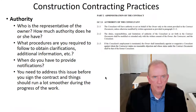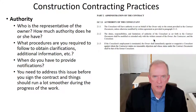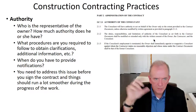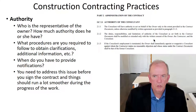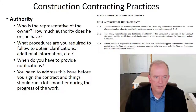Authority: if the owner or client gives authority to someone to represent them, that's usually the consultant. The CCDC contract includes a section on the authority of the consultant, giving them authority to look after the owner's interests during the construction process. They do things like inspections and reviewing payments — a lot of things the owner is quite frankly not skilled to do. They're hired for that purpose to allow things to run much more smoothly.